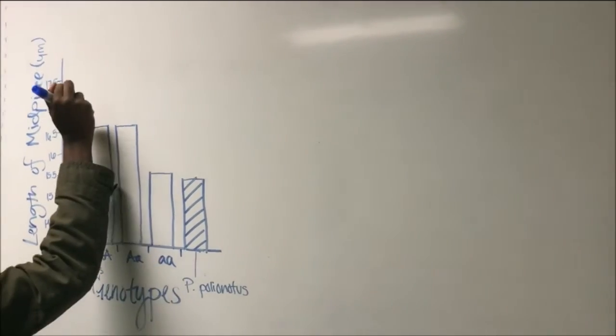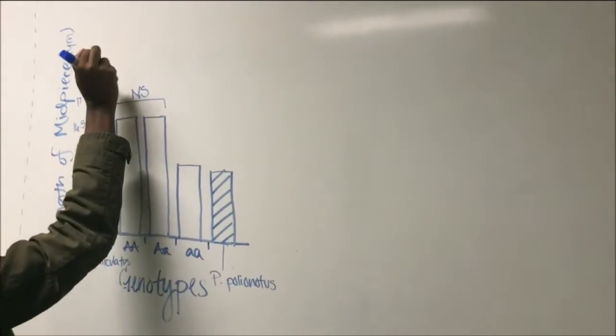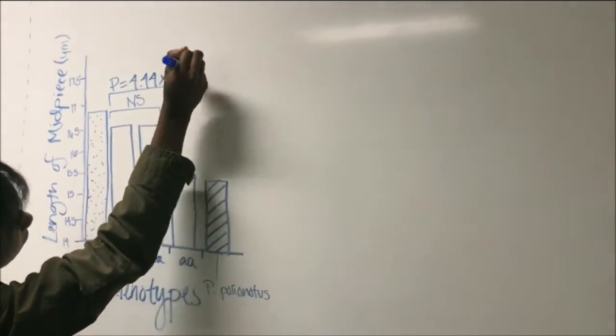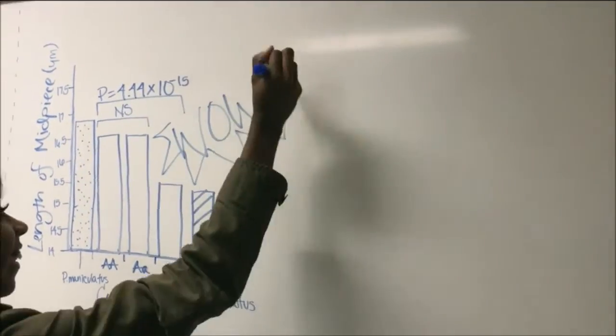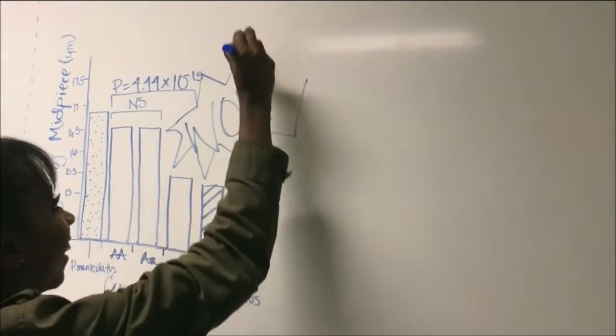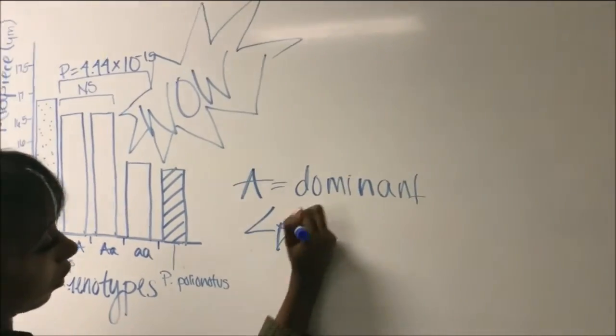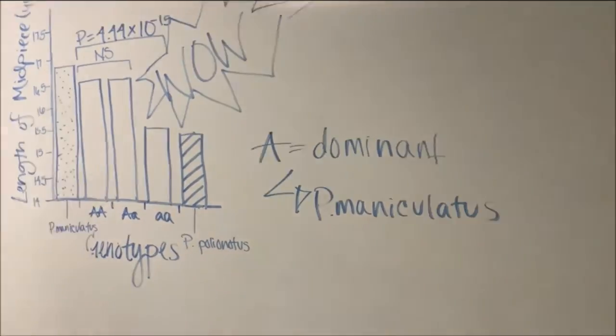On the y-axis is the length of the midpiece. The black bar represents the average length of P. maniculatus midpiece in the original lab colony of mice, and the white bar represents the average midpiece length among P. polionotus from the original colony. There is no significant statistical difference in midpiece length between males Big A, Big A, and Big A, Little A.